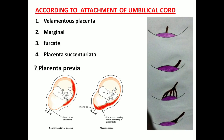According to the attachment of the umbilical cord: the normal attachment is central to the placenta. The marginal type has the umbilical cord attaching to the margin. Furcate means the umbilical vessels divide before reaching the placenta. Velamentous insertion means the blood vessels are attached to the amnion and ramify before reaching the placenta.